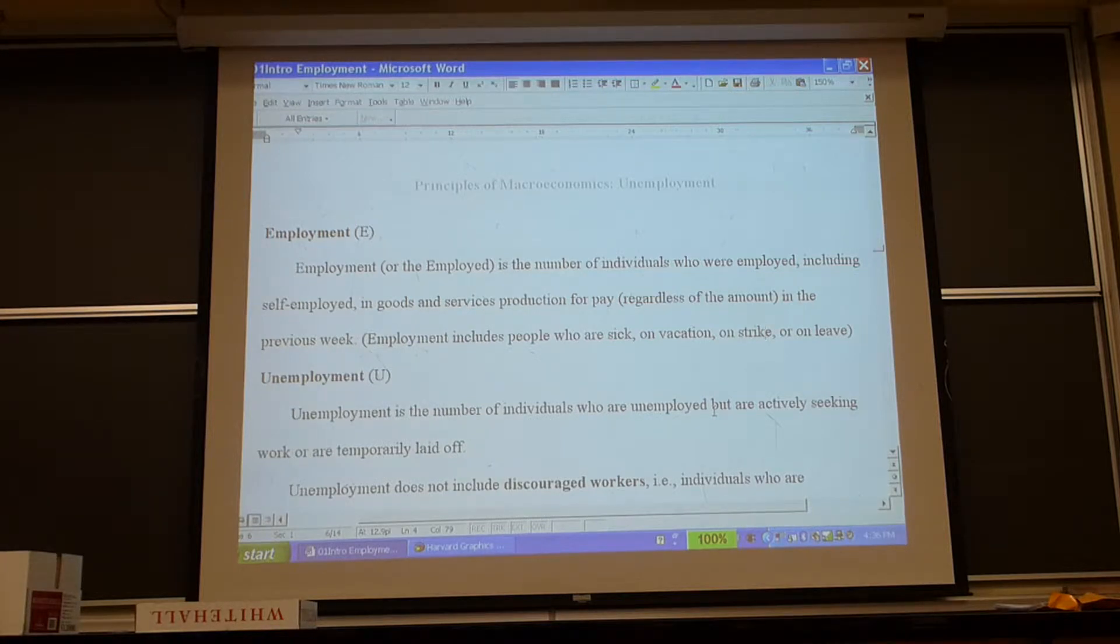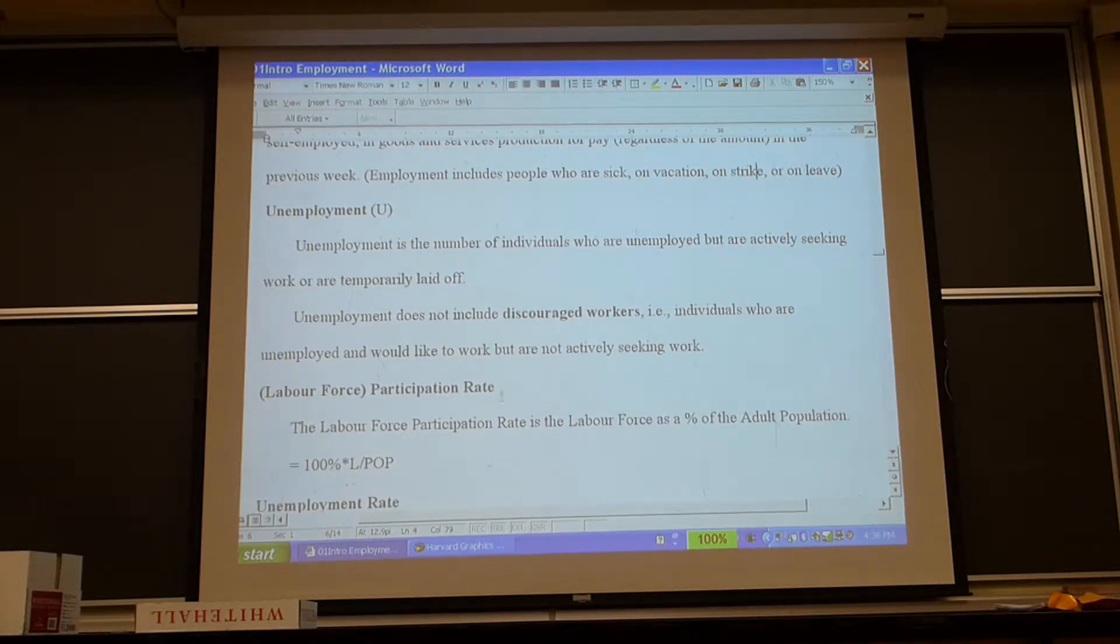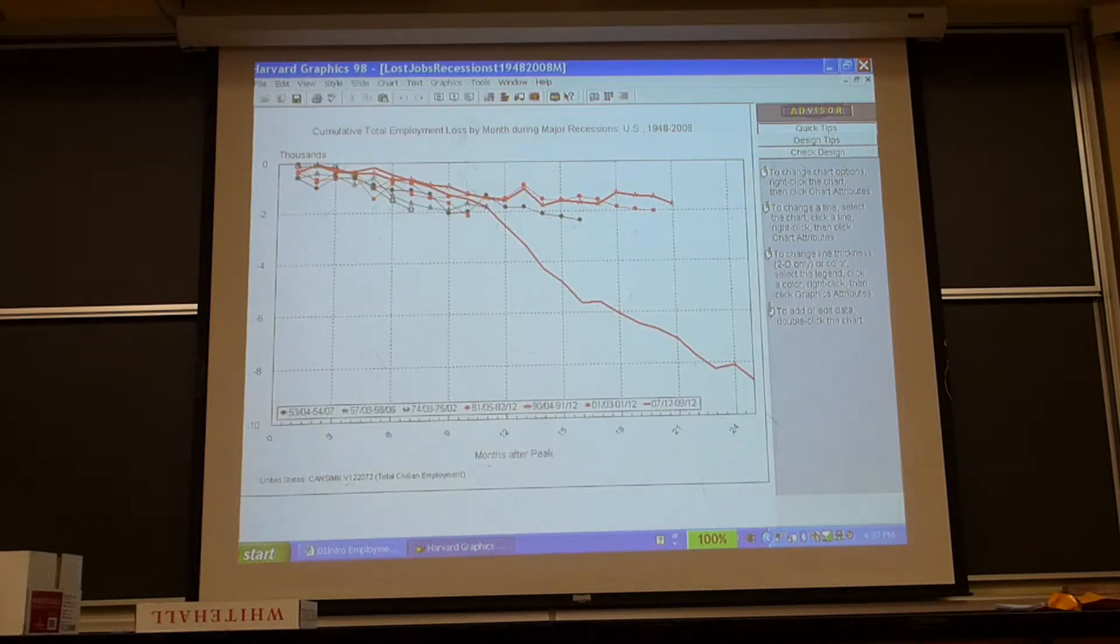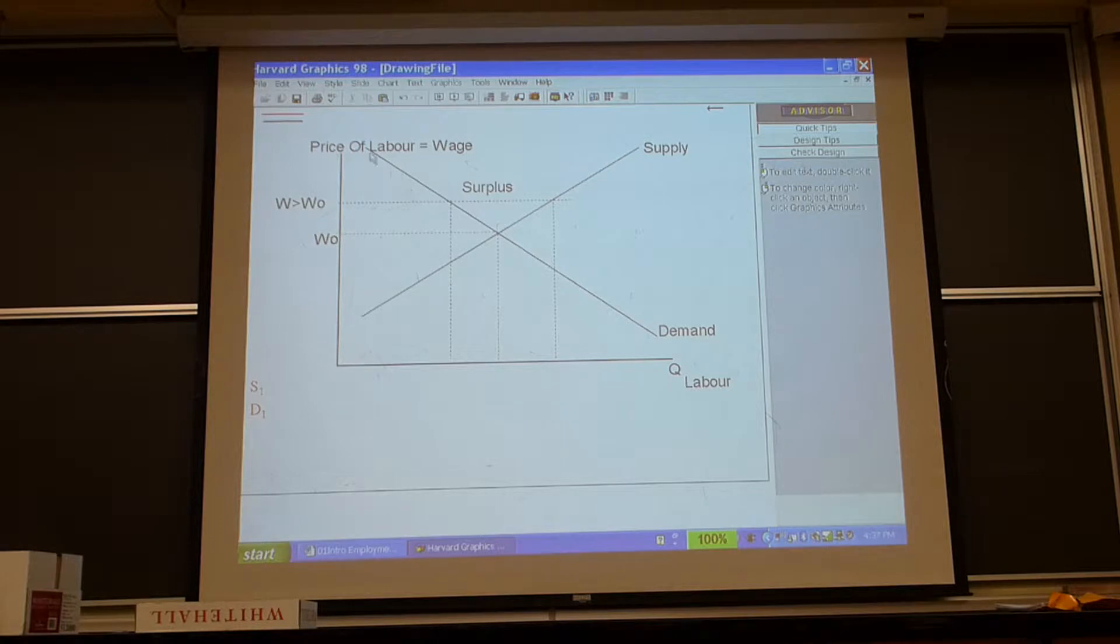For you people now comes the moment of truth pretty soon. The labor force participation rate is the ratio, the percentage of the labor force, or the labor force, the number of workers who are employed or unemployed, as a percent of the adult population. And the unemployment rate is the number of people who are unemployed as a percent of the labor force. The key thing here is to understand who is in the labor force.